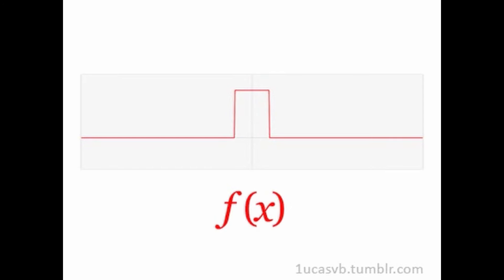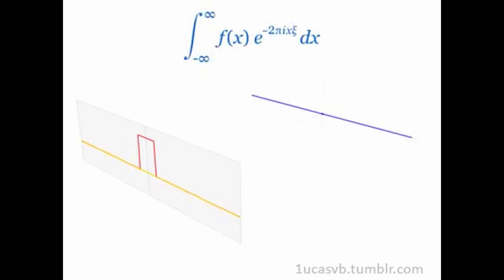Gauge theories — for example, electromagnetism, quantum chromodynamics, and electroweak theory — involve gauge symmetries. Gauge symmetries are crucial for understanding fundamental forces and particle interactions. Examples include U(1) symmetry for electromagnetism and SU(3) symmetry for the strong interactions.